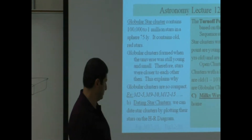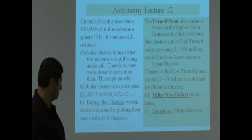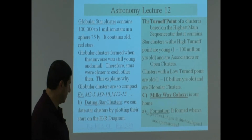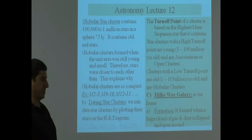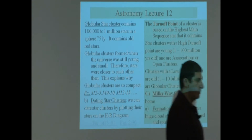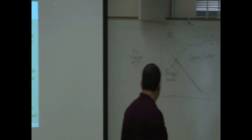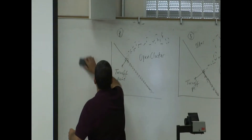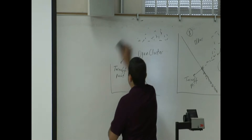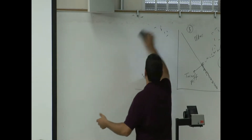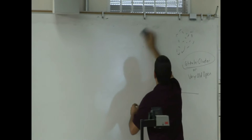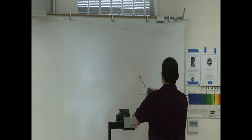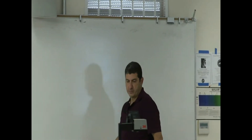Milky Way is our home. It formed when a huge cloud of gas and dust collapsed and spun around. Pretty much the Milky Way and other galaxies form just like a star forms — a huge cloud of gas starts collapsing, spinning, and forms a galaxy.